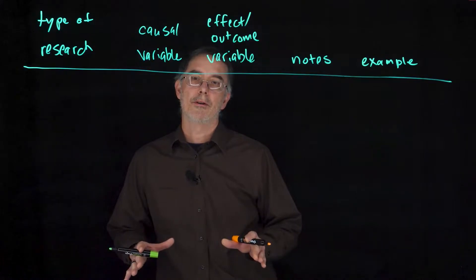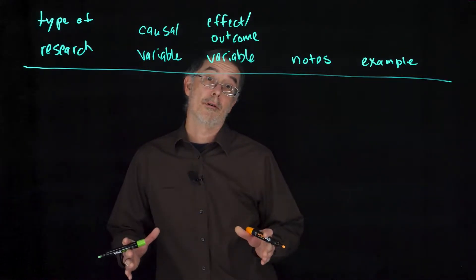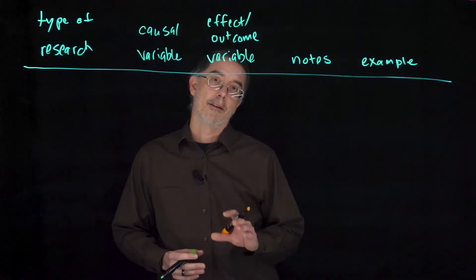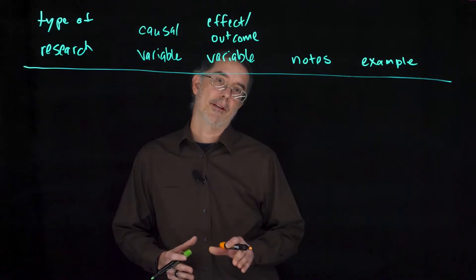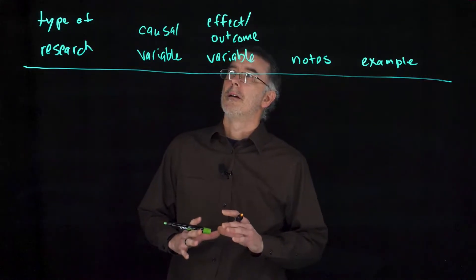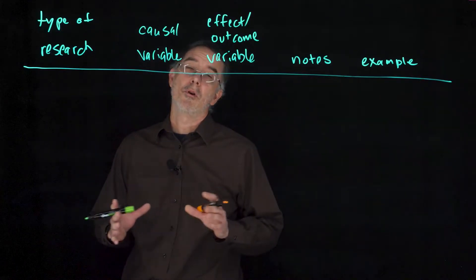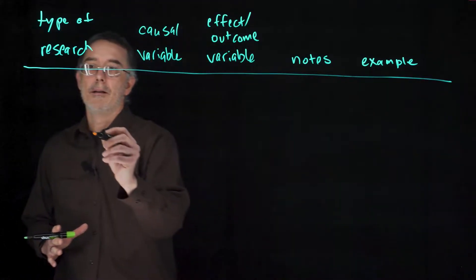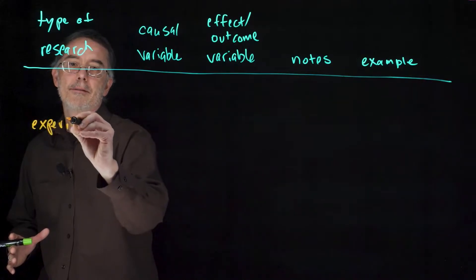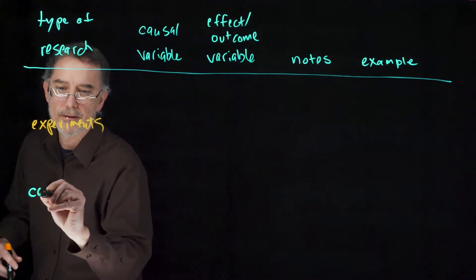When you are doing research, variables have other important characteristics or considerations. The next one I am going to talk about relates to the kind of research that you are doing. Scientific research can be broken down into two types: experiments and correlational studies.